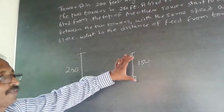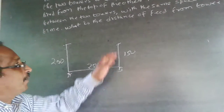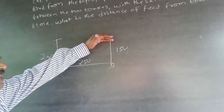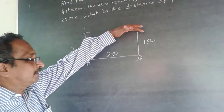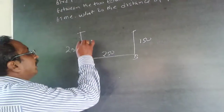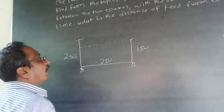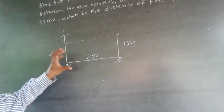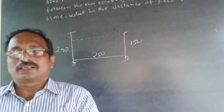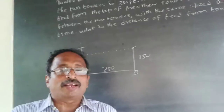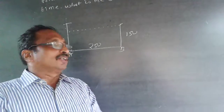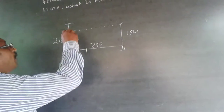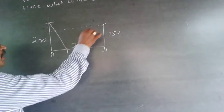The feed is between the two towers on the ground. Anything above the ground level between the towers could be between them, but the feed cannot be in the air due to Newton's law of gravitation. So the feed has got to be only on the ground somewhere here. One bird comes from this point to this point, and the other bird comes from this point to this point.